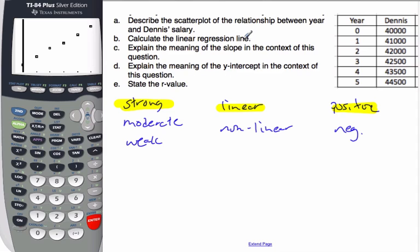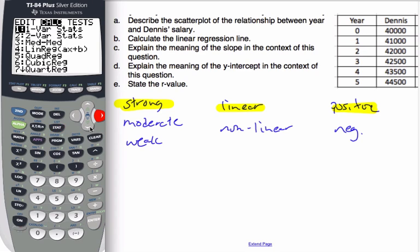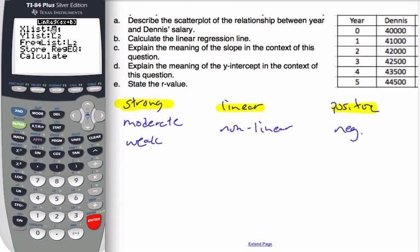Then it says calculate the linear regression line. To do that, I'm going to go stat, and I want to calculate something, a statistic. I'm going to calculate linear regression number four. My x list is L1, my y variables are L2. But my frequency, if I look at my table, there's no frequency associated with them. These are just data points, so I'm going to delete the frequency. I want to store the regression equation, which means the line of best fit. I'm going to put that into y1, which I go alpha trace y1, and I'm going to calculate it.